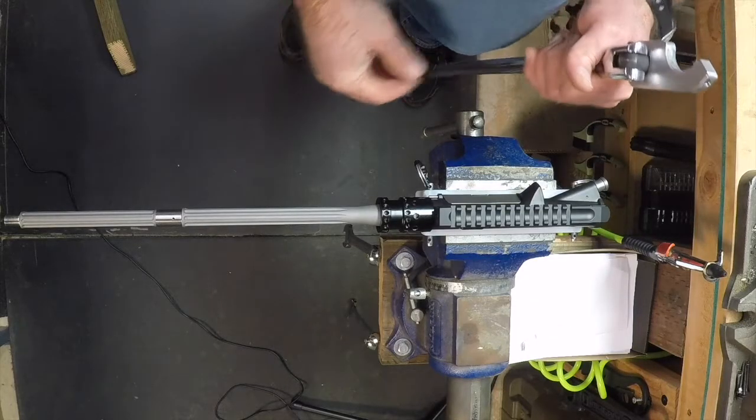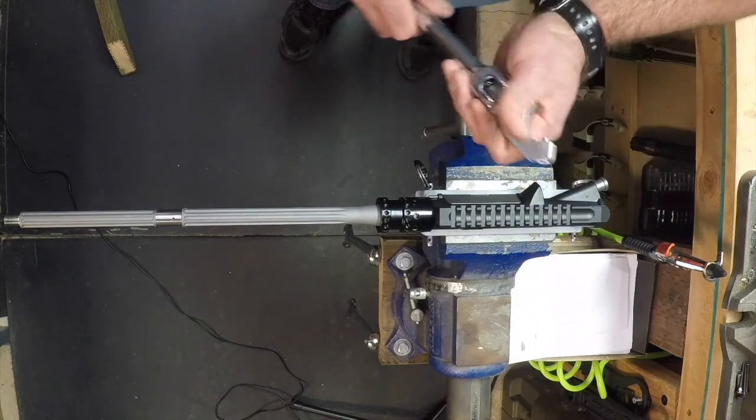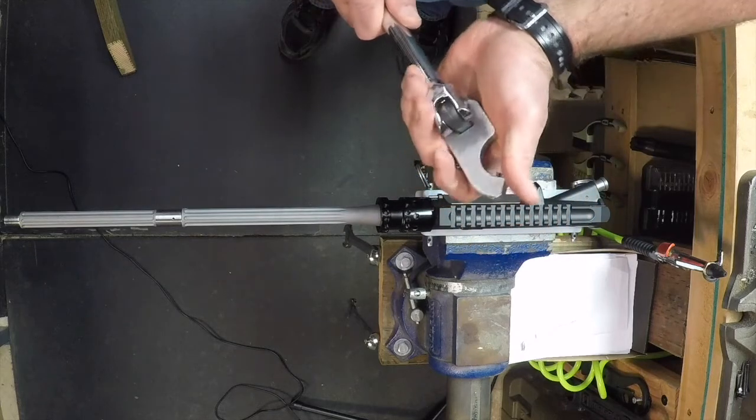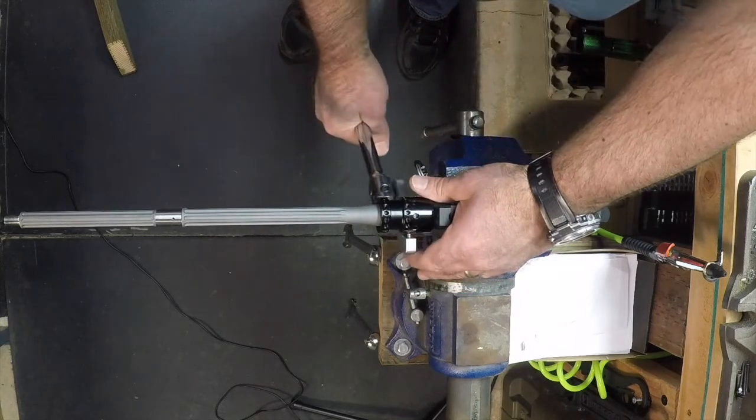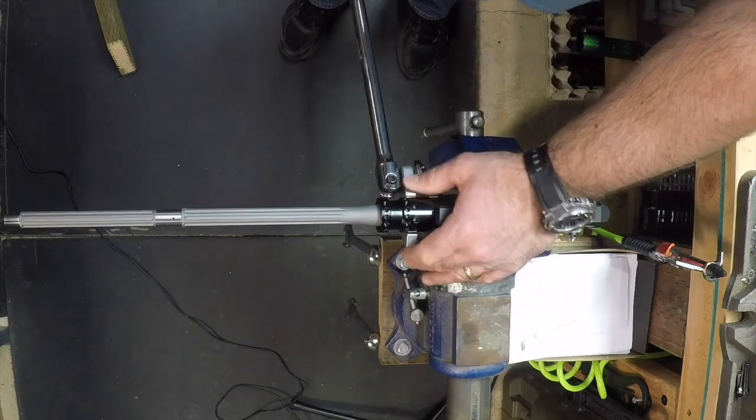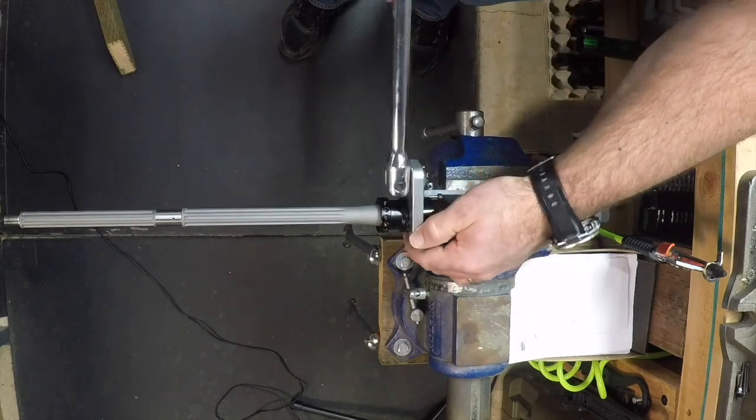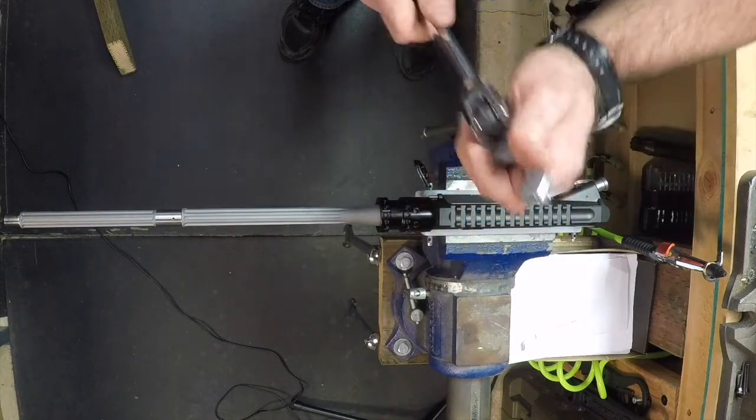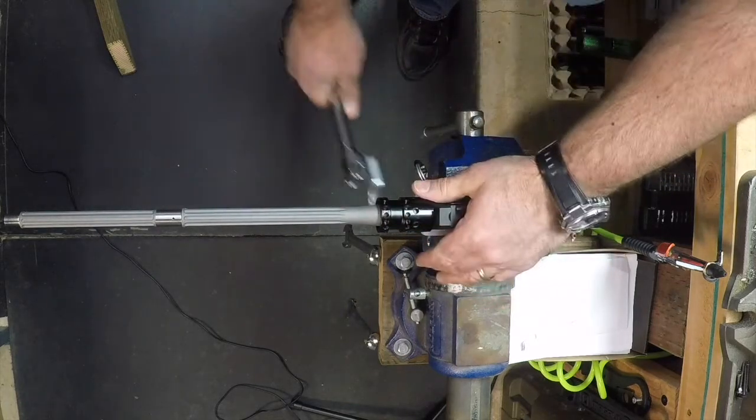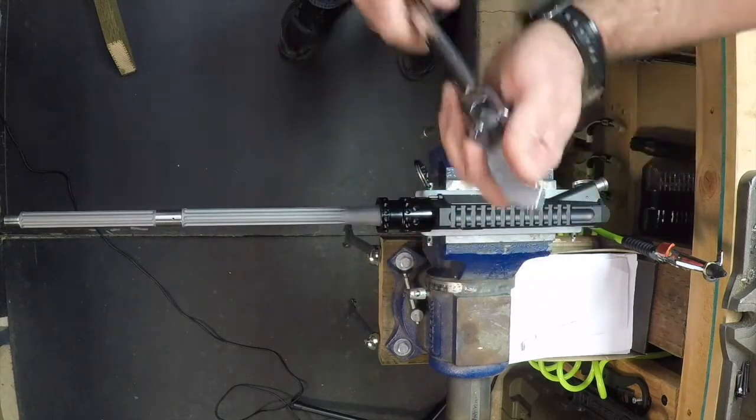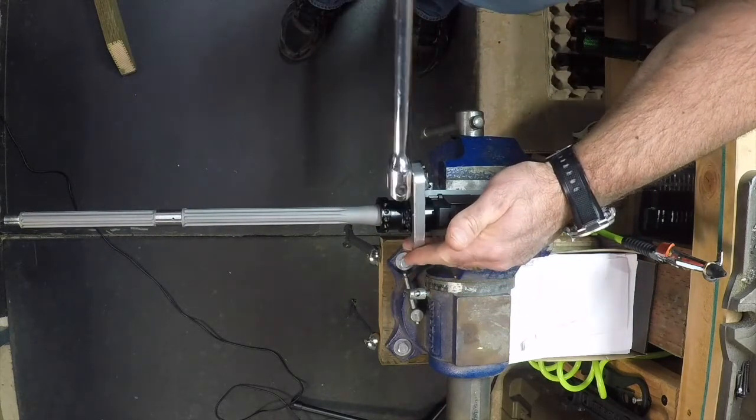So once you get it to where it stops, take your barrel nut wrench that we provide. And essentially I like to work it three times, tighten and loosen, to kind of break in the threads on both the barrel nut and the upper receiver. And I'm just guessing I'm going to about 50 foot pounds and back.